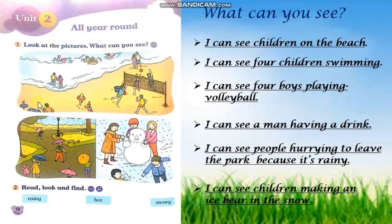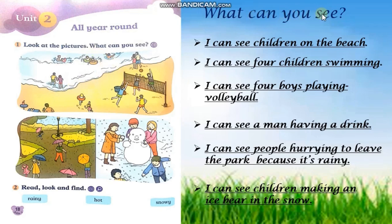Can you see the picture? What does it say? It says, look at the pictures. What can you see? Now, let's look at picture one. Can you see the weather? It's sunny. Can you see some children on the beach? Yes. What are they doing? Now, let's read. Number one. What can you see? I can see children on the beach.